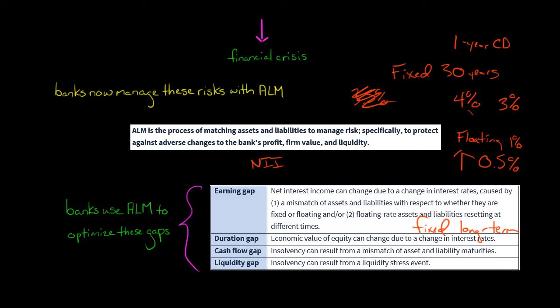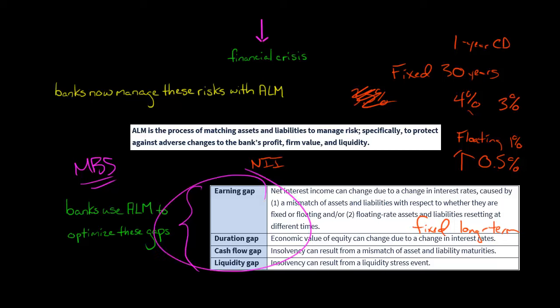The liquidity gap involves liquidity stress events. For example, if a bank relies heavily on funds from the repo market or mortgage backed securities and suddenly the market crashes and nobody wants to buy MBS, the bank can no longer get funds from that source. If that extreme event happens, would the bank become insolvent? By identifying that risk, the bank can take steps to address it. ALM — managed by the Treasury Department — is about actively managing these risks so there are no huge fluctuations in net interest income, economic value of equity, or worst case, a liquidity event that makes the bank insolvent.